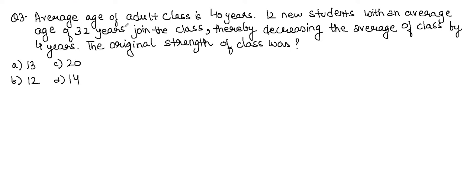Question number three: the average age of an adult class is 40 years. Twelve new students with an average age of 32 years join the class, thereby decreasing the class average by 4 years. We need to find the original strength of the class.